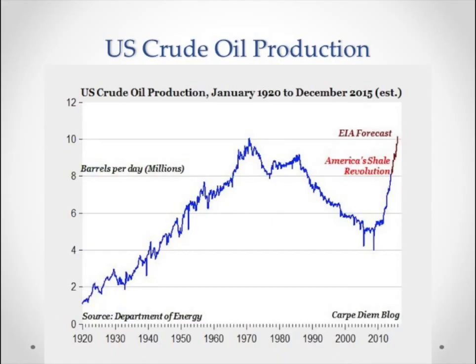Global oil production began in the United States about 1920. As you can see in this graph, there was a rapid increase in oil production and consumption, a peak around 1970, then a decline. Then, about six to eight years ago, there was a rapid increase due to fracking — hydraulic fracturing of shale oil resources — the so-called American shale revolution.